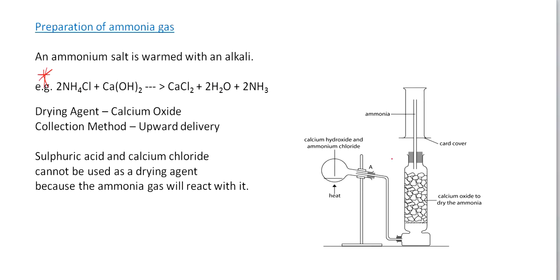Ammonia gas is less dense than air. You need to remember this diagram — we have solid calcium hydroxide and ammonium chloride, and we apply heat to produce ammonia gas. In order to dry the ammonia gas, we use calcium oxide as the drying agent. You need to remember that calcium oxide is the drying agent for ammonia.